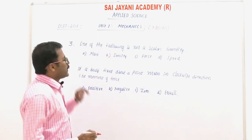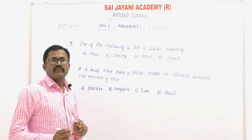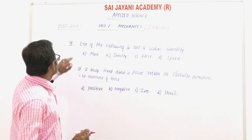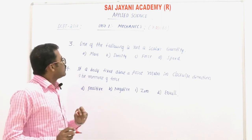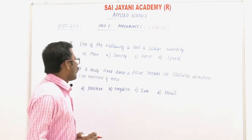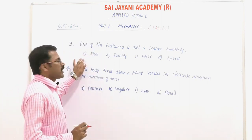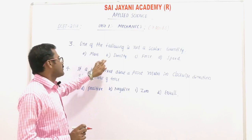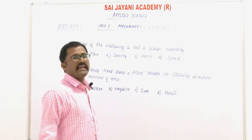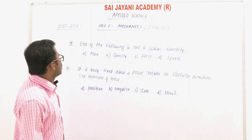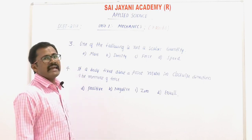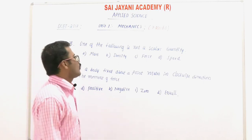DCT 2017 question paper, question number 3: which one of the following is not a scalar quantity? Option A: mass. Option B: density. Option C: force. Option D: speed.